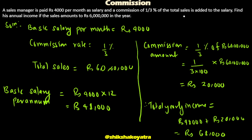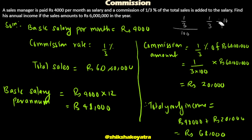So 1/3% of ₹60 lakhs: that is 1/3 divided by 100, multiplied by 60 lakhs, which gives ₹20,000 commission. The basic yearly salary is ₹4,000 per month, so annually that is ₹48,000. Total annual income is ₹48,000 plus ₹20,000 equals ₹68,000.